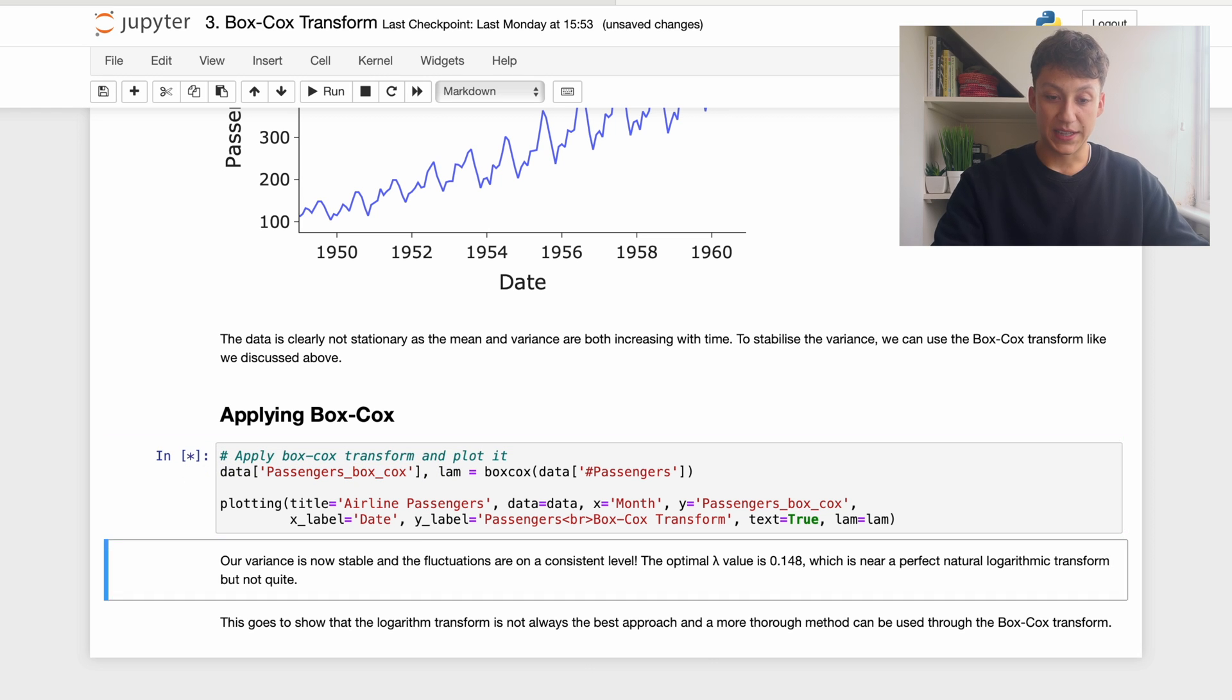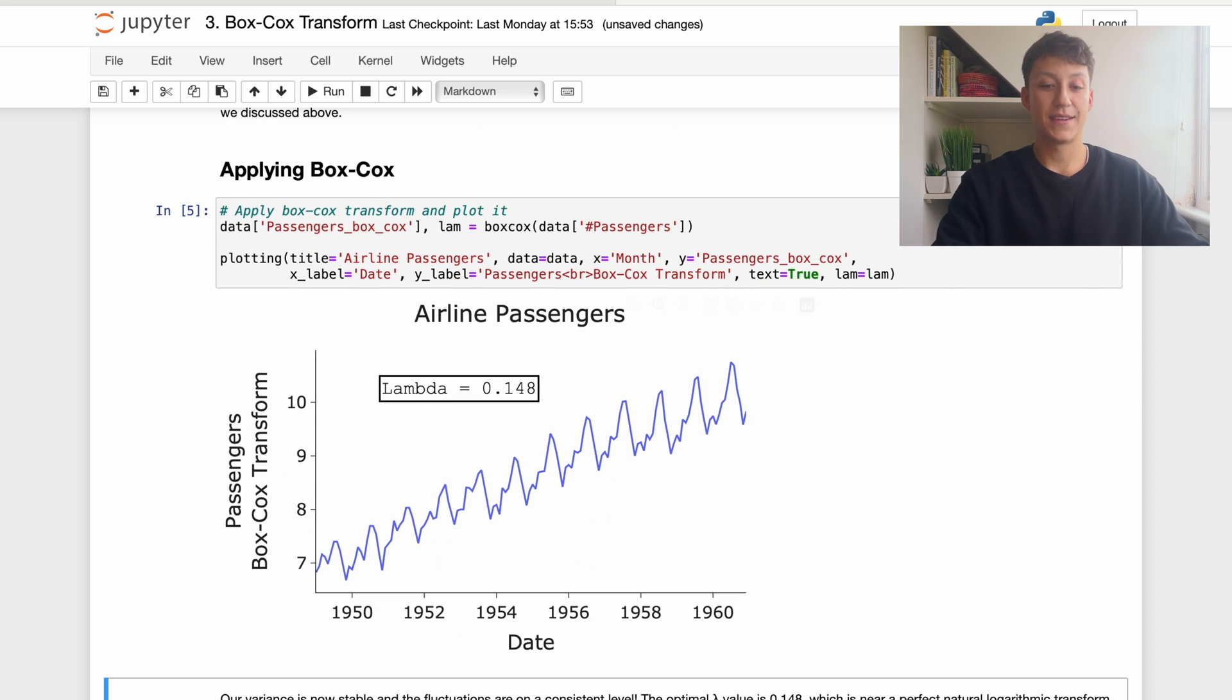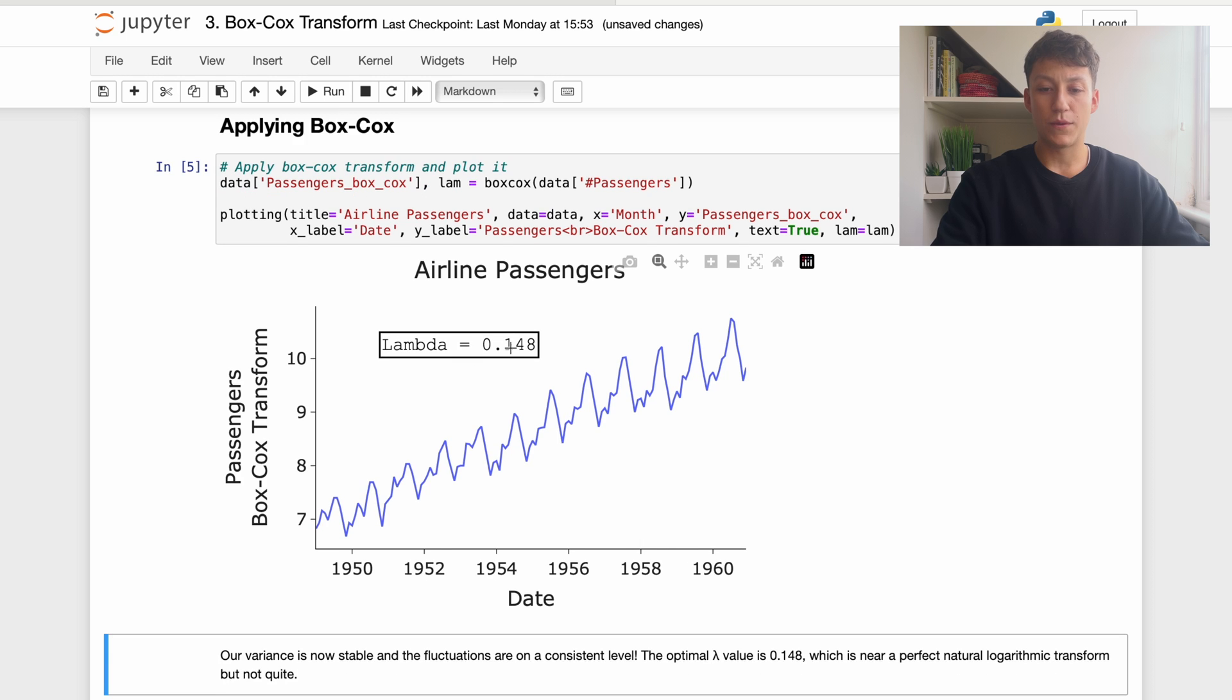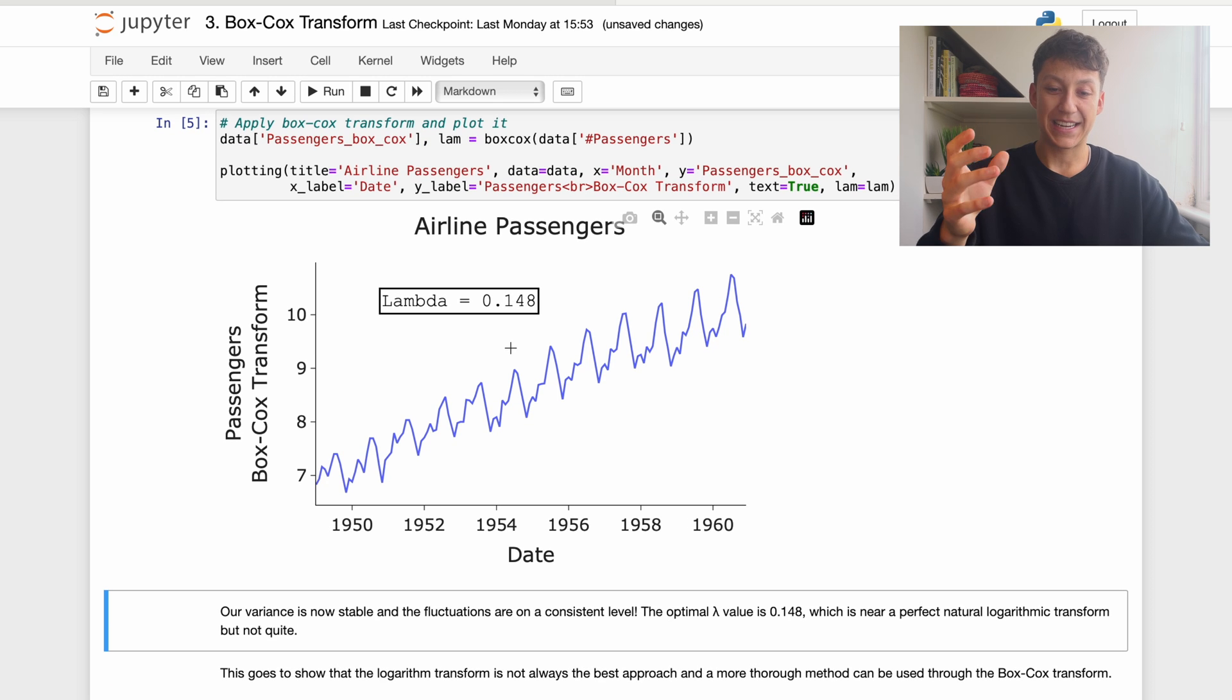So by plotting that we get this. What you see here, the data is now a lot more stable, or the yearly fluctuation is a lot more stable. They're not increasing through time; they're pretty much very consistent. We've also outputted the best value of our lambda. So you see our lambda is 0.148, so it's nearly exponential but not quite.